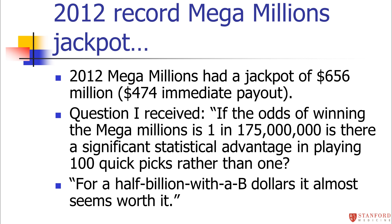Now let's get back to the Mega Millions jackpot I mentioned as a teaser. In 2012, the Mega Millions lottery had gotten up to a record jackpot — the biggest ever — of $656 million. There had probably been a number of weeks where nobody had won and the pot had built up. When you win, you can take the amount distributed over 30 years, or take an immediate payout for a lot less but right away. The immediate payout here was going to be around $474 million.